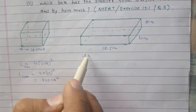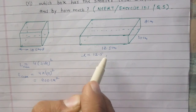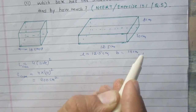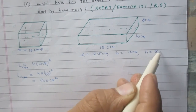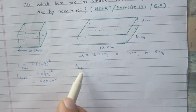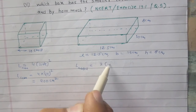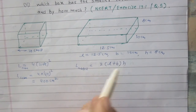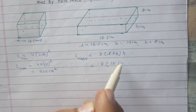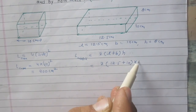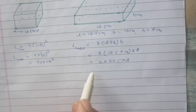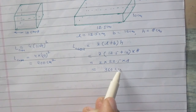Now, let us consider L, which is the length of the cuboid — it is 12.5 cm. B stands for the breadth — it is 10 cm. And H stands for the height — it is 8 cm. Lateral surface area of a cuboid is twice of (length plus breadth) multiplied by height. After substituting the values, we get 2 × (12.5 + 10) × 8, which is 2 × 22.5 × 8, and finally you get 360 cm².